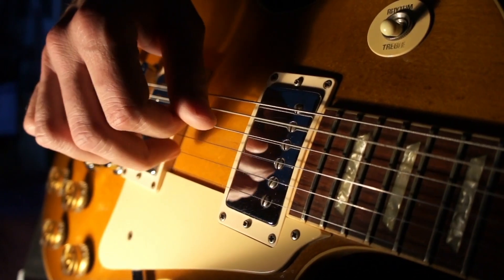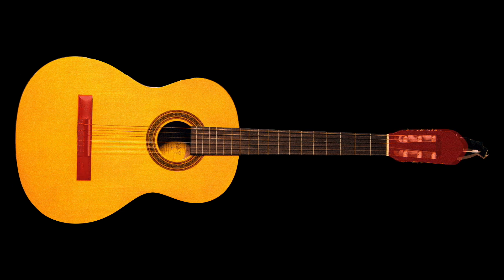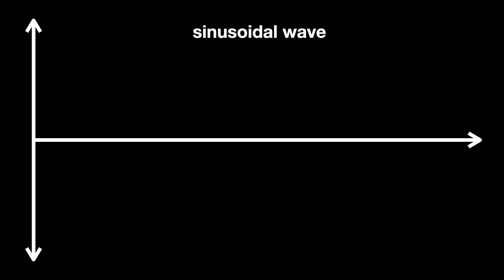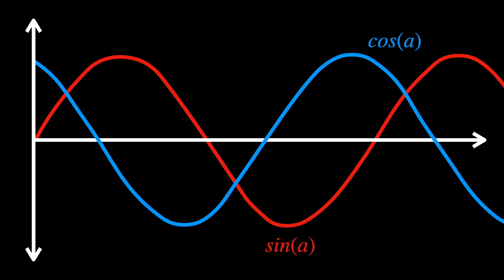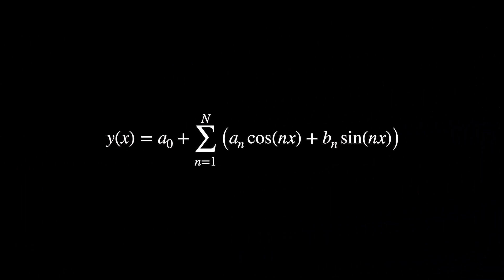When you pluck a guitar string, you displace part of it from its resting position. The initial shape of the string at the moment it is released forms the initial condition for the wave equation. The ends of the guitar string are fixed, which means the displacement y at these points must always be zero — these are called boundary conditions. Using methods from calculus, the wave equation can be solved. These vibrations can be broken down into simpler regular waves called sinusoidal waves, and mathematicians like d'Alembert and Daniel Bernoulli proposed representing y as a sum of sine and cosine terms, or a trigonometric series.